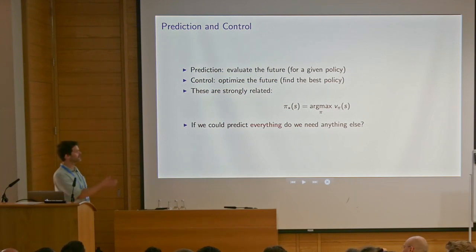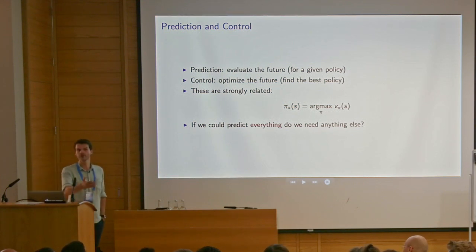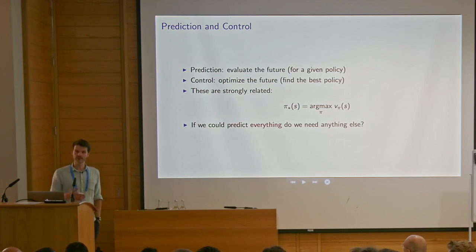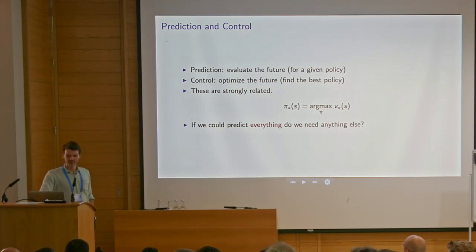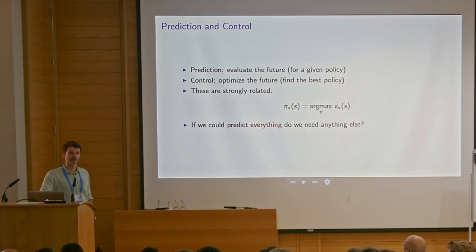Prediction and control are strongly related in the sense that if you maximize over all value functions — if you could somehow do this for all policies — then the optimal policy would have the maximum value over all policies. So again, this is a question I posed at the beginning: if we could predict everything, do we need anything else? It's kind of an open question, but it's kind of hinting towards an answer.